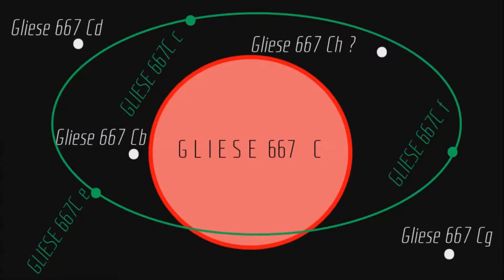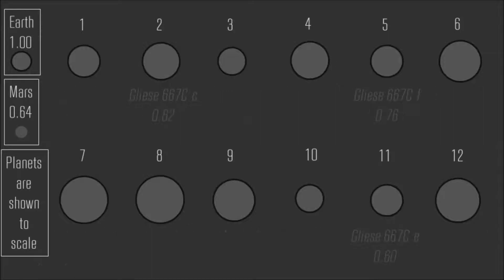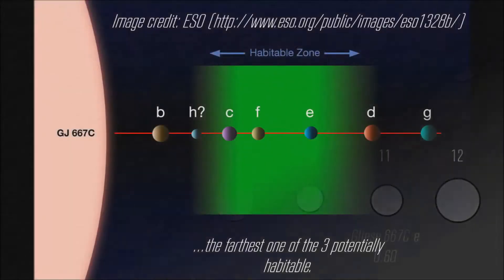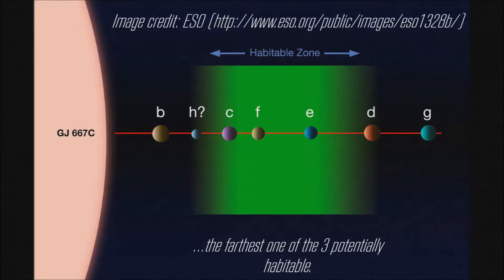Who would have believed it? Three potentially habitable planets had been found in one star. Gliese 667CE has an Earth Similarity Index lower than Mars's, because it is the coldest and farthest one from the star. However, it is expected to be bigger.